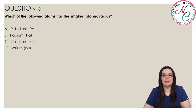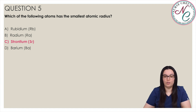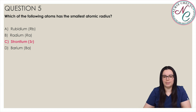Which of the following atoms has the smallest atomic radius? Is it A Radibium, B Radium, C Strontium, or D Barium? And the correct answer is C Strontium. The length of the atomic radius decreases as you move from left to right across the period or row of the table and it increases as you move down a group or column of the table. Strontium is located to the right of radium in the fifth row and above barium and radium in the second row, so its atoms have the smallest atomic radii.